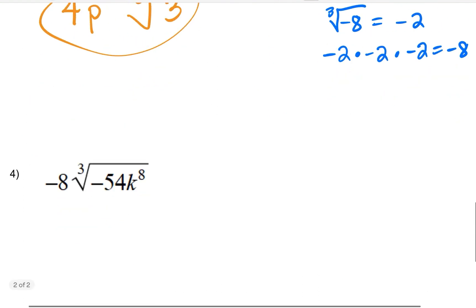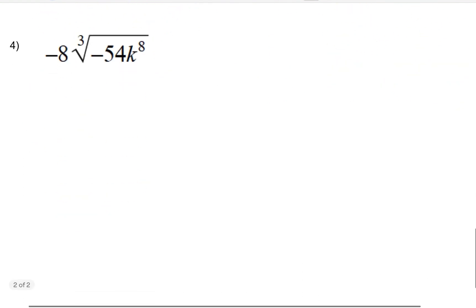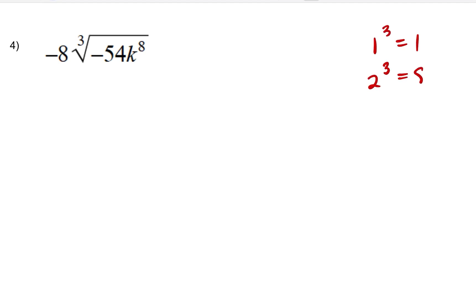Let's do one more. That last index number is three, so I'll be looking for numbers that are perfect cubes. One to the third is one. Two to the third is eight. Three to the third is 27. And this continues — these are just the smaller numbers I'm using. We have 54.